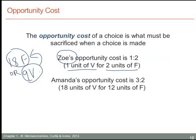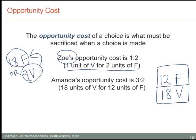What about Amanda? We know that Amanda's production possibilities enable her to produce 12 units of fish or 18 units of vegetable by devoting all of her time to one of these activities. So while Zoe's opportunity cost of one unit of vegetables is two units of fish — because she produces twice as many fish as vegetables — Amanda's opportunity cost is three to two. She produces 18 units of vegetables or 12 units of fish, which is a ratio of three to two. So the opportunity cost for each of these individuals differs.